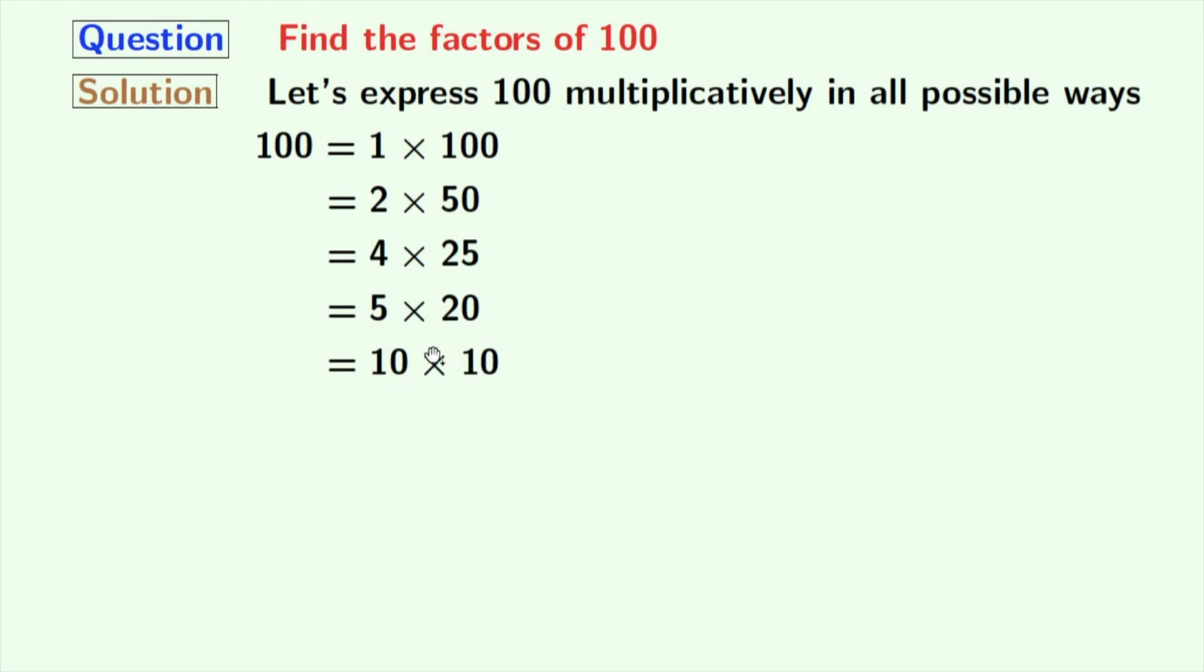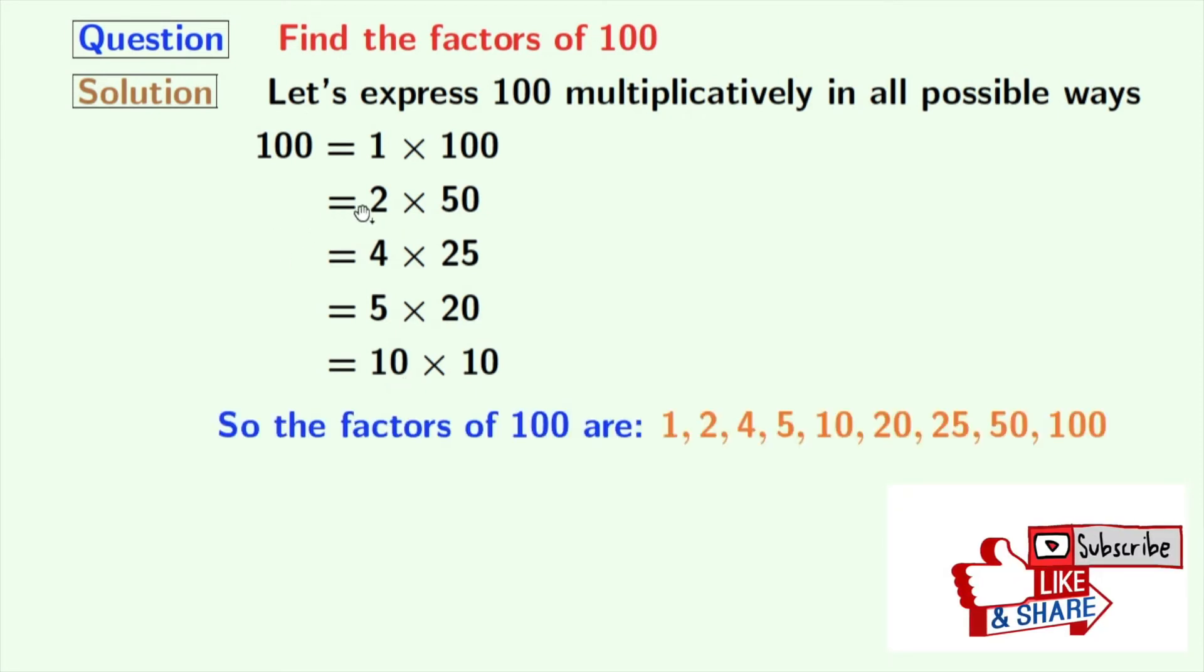There is no number between 10 and 10, so we will stop here. So, here are the factors of 100 which are 1, 2, 4, 5, 10, 20, 25, 50 and 100.